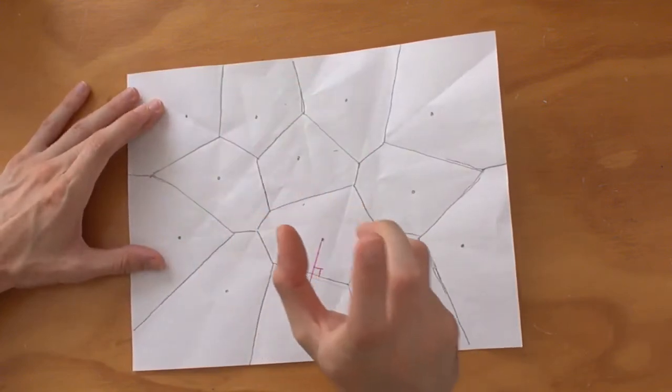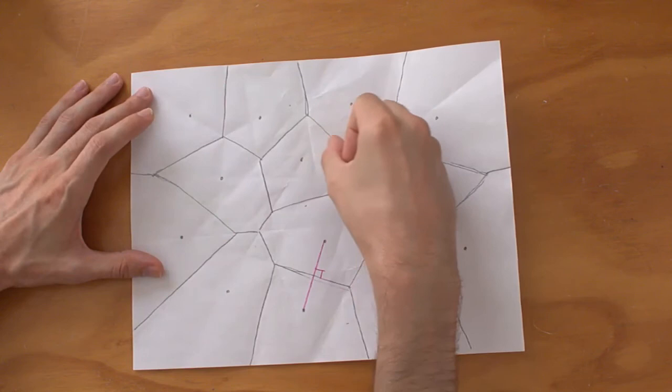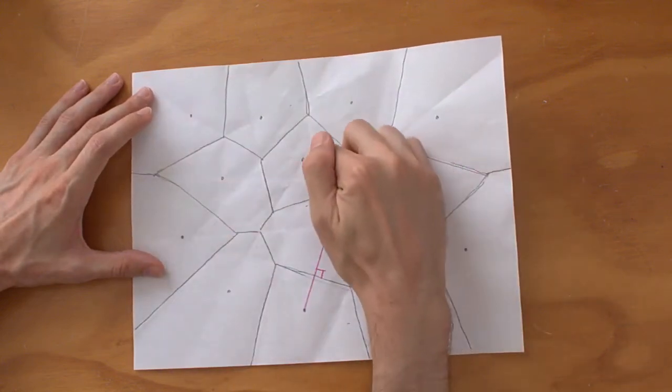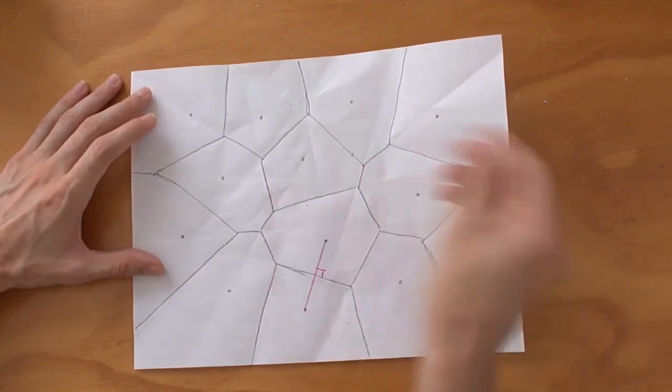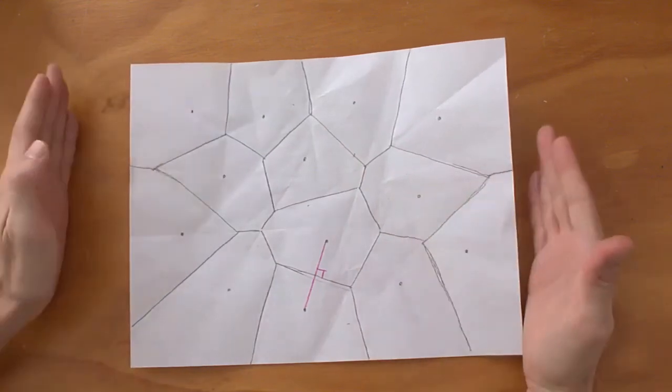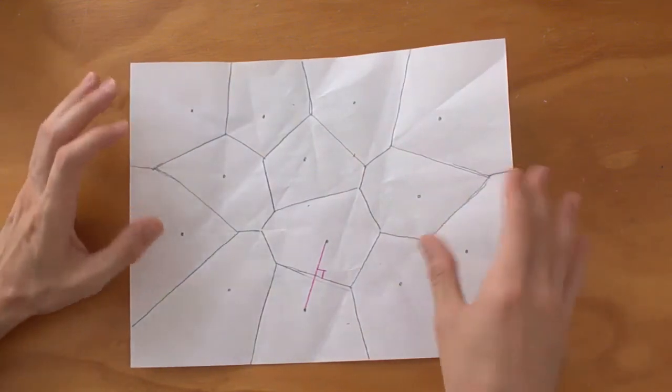So it's exactly the conditions necessary to construct Voronoi. Voronoi and folding apparently have this very interesting relationship. They're very close.